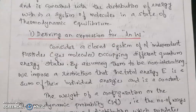We are going to discuss a closed system of N independent particles occupying different quantum energy states. By assuming them to be non-interacting, we impose a restriction that the total energy is a sum of their individual energies and is constant.